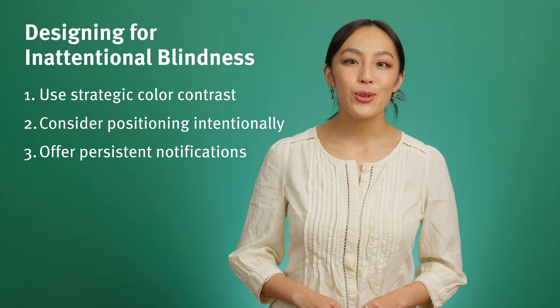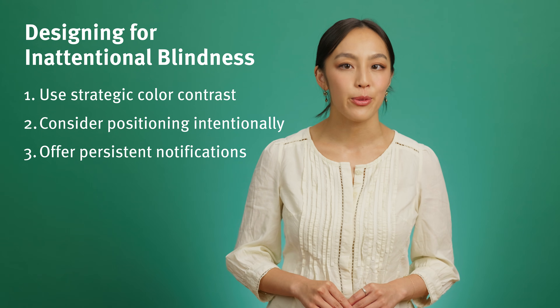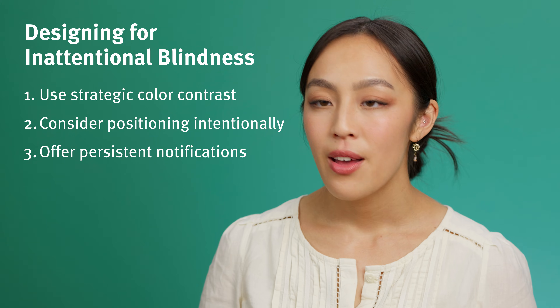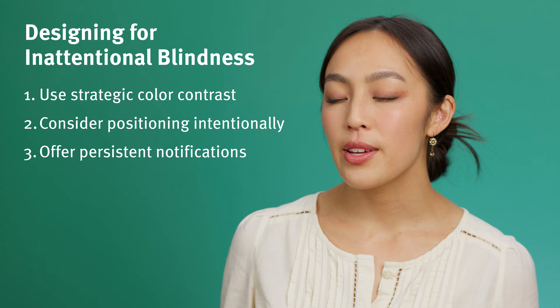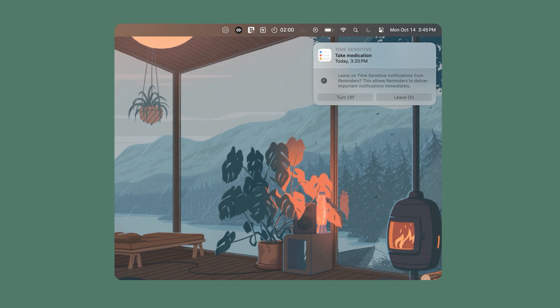Lastly, allow users the option to turn on persistent notifications for critical information. The message will stay on the user's screen until it's noticed and dismissed. In this example, a persistent notification reminds the user to take their medication at the scheduled time. The reminder must be noticed and then dismissed to make sure that the user stays on track with their medication regimen and avoids missing a dose.